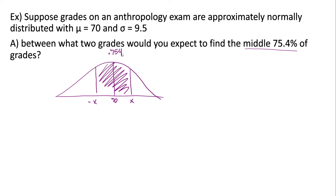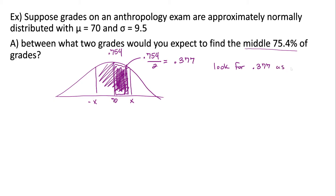Now we decide whether to solve this using the tables or the calculator. Using the tables, we can't look up 0.754 directly on the z-table because it doesn't go that large in terms of area. So we need to find the piece of area between the mean and either the positive or negative z-score. That piece is 0.754 divided by 2, which equals 0.377. We look for 0.377 as an area on the z-table, or the closest value to it.